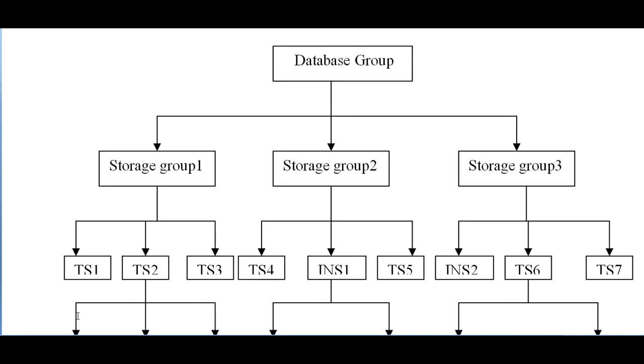Below would be the hierarchy of how a database forms. The database group is divided into storage groups — storage groups 1, 2, 3.